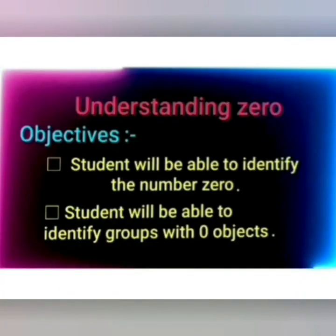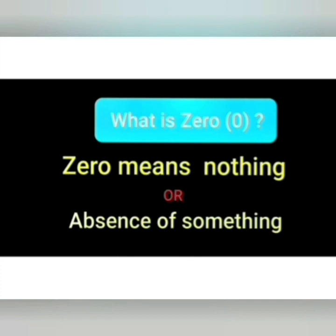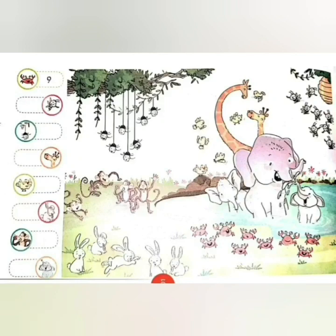Our first topic is Understanding 0. Let's have a look at the following objectives. First, students will be able to identify the number 0. Students will be able to identify groups with 0 objects. Now, let us understand what is 0. 0 means nothing or we can say that 0 means the absence of something.